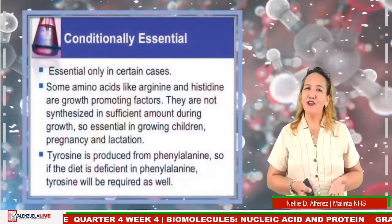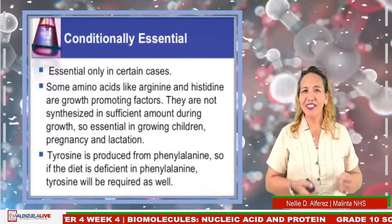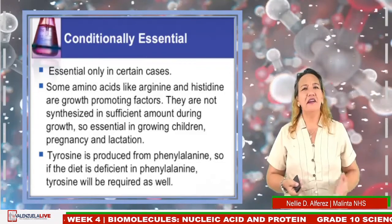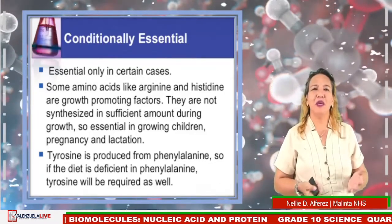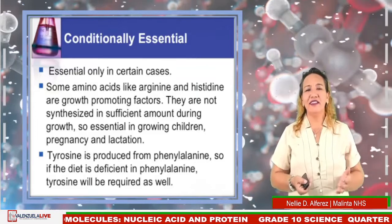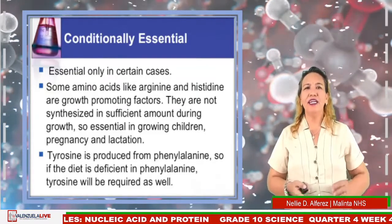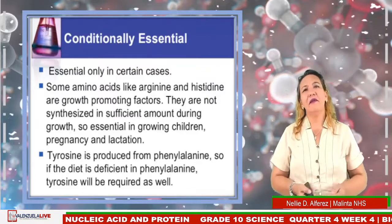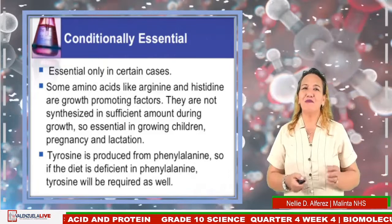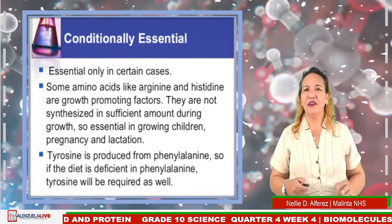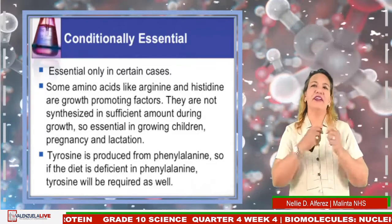There are also conditionally essential amino acids — essential only in certain cases. Some amino acids like arginine and histidine are growth-promoting factors. They are not synthesized in sufficient amounts during growth, so they are essential in growing children, during pregnancy, and lactation. Tyrosine is produced from phenylalanine, so if the diet is deficient in phenylalanine, tyrosine will also be required.